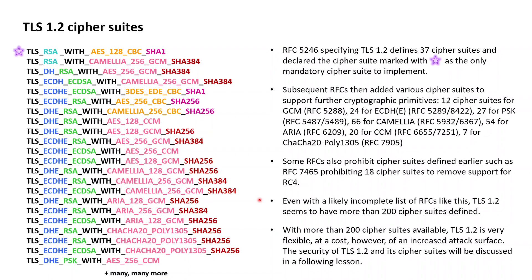With this vast set of 200-plus cipher suites, TLS 1.2 introduced a lot of flexibility into the protocol, but clearly this flexibility also leads to an increased attack surface of the protocol. How TLS 1.2 was attacked and what the security implications are regarding its cipher suites will be discussed in a following lesson.